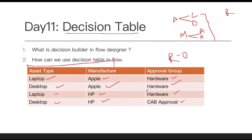Can we build this through if/else blocks? Yes we can, but let's say tomorrow they don't want hardware approval and want CAB approval instead. We would need to update our flow. But if we build it in a tabular format we don't need to update the flow — we just update the value in the table. That's the reason ServiceNow came up with the concept called decision builder or decision table.